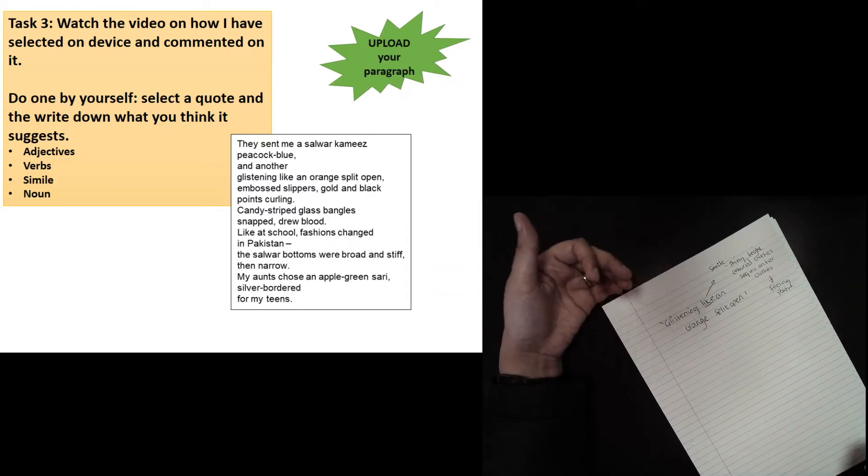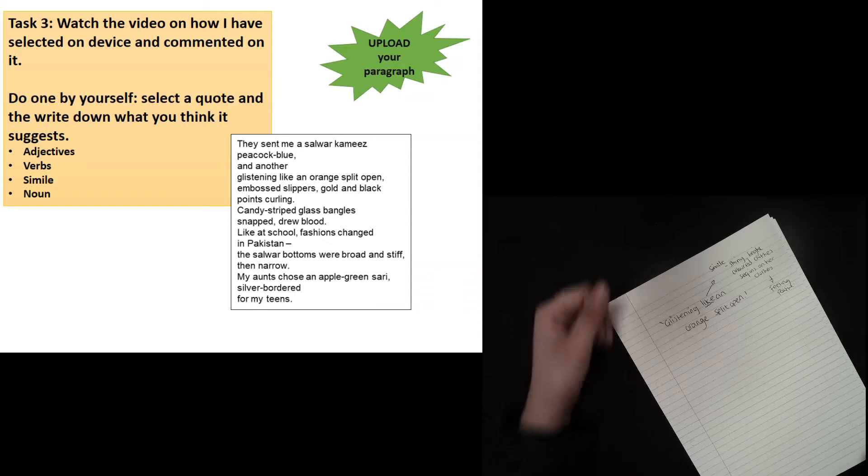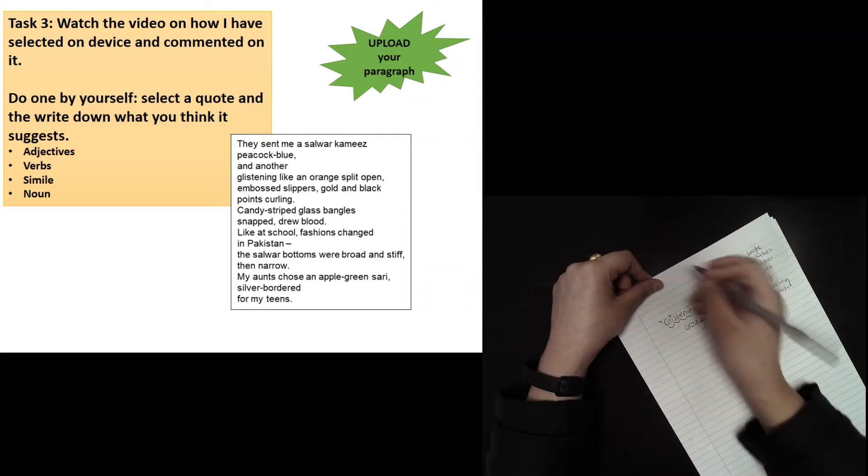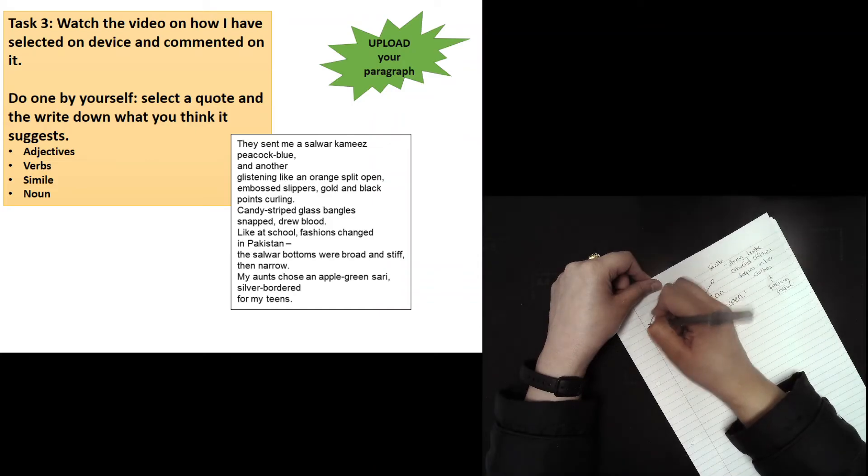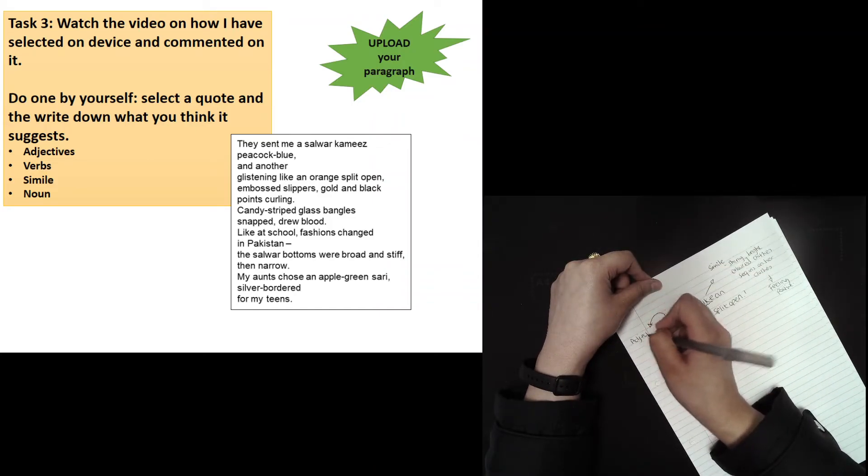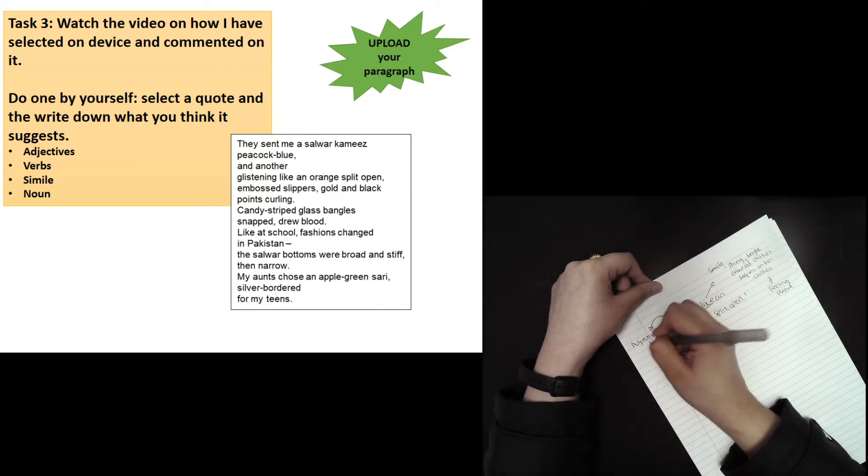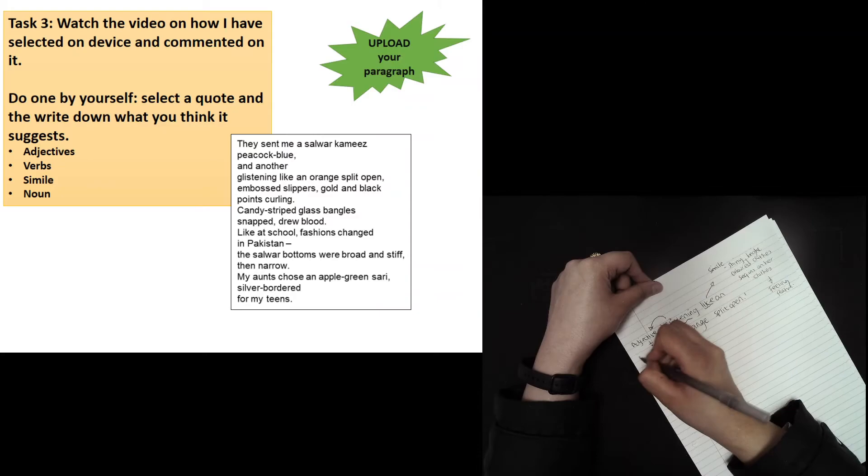Once you've zoomed into one of the key words, you might want to zoom into something else. Here I'm going to zoom into the word 'glistening,' and glistening is an adjective as it's describing how it looks. If it's glistening, it's showing it's shiny.